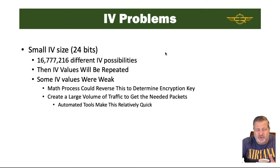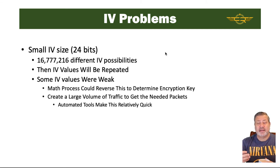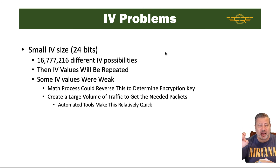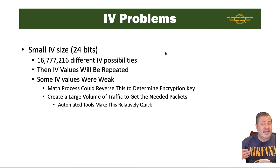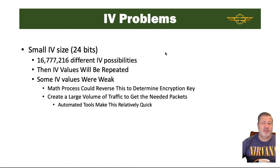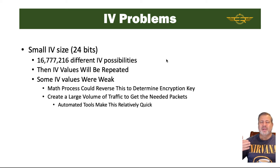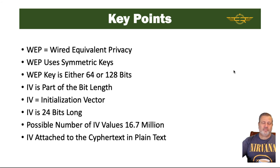With techniques like disassociation attacks and replay attacks, an attacker can drive up traffic volume across the network. As soon as we get to around 15,000 to 20,000 packets with different IVs, that's normally the range needed to start getting repeated IV values — and if we can repeat the weak ones, even better. This is almost exclusively done with automated tools that push a lot of data across the network and then use that data to break the WEP key. That's why most new access points won't even allow you to use WEP.